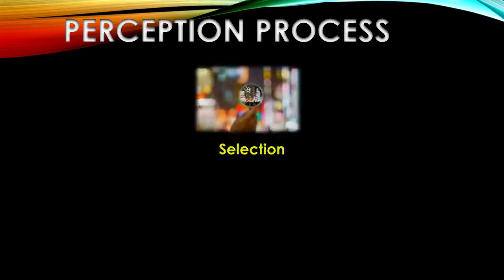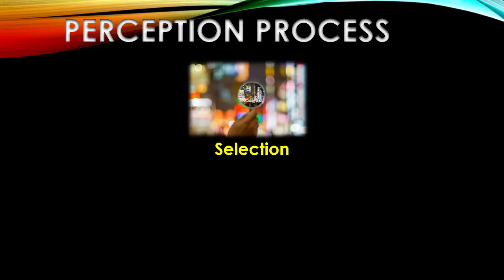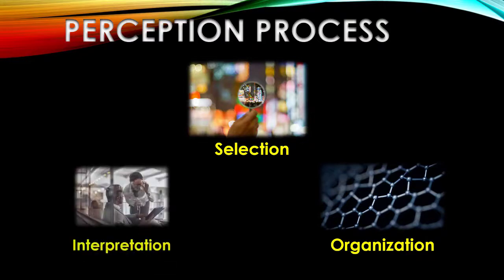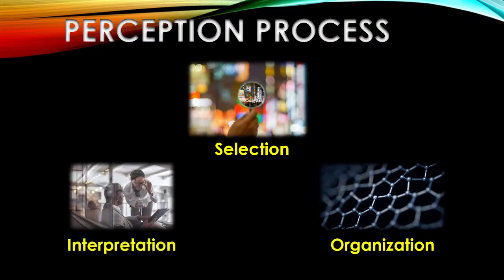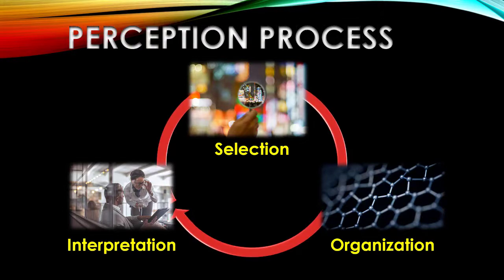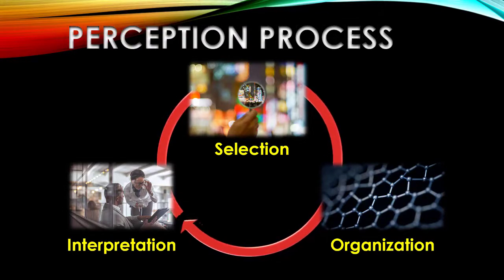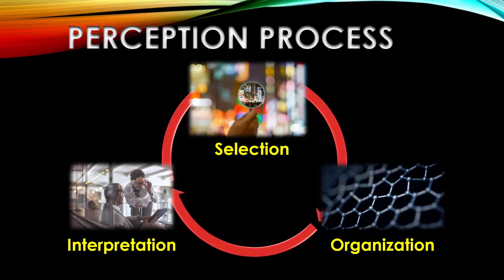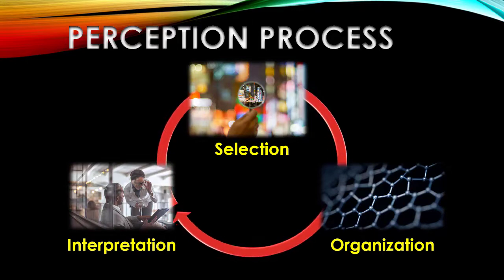This process involves three distinct stages. First, a stage of selection. Second, a stage of organization. And third, a stage of interpretation. These three stages of perception take place in an ongoing cycle of taking in sensory information, giving it structure, in order to ultimately figure out what it means. Let's take a look at each of these stages one at a time.